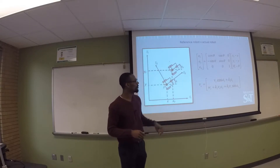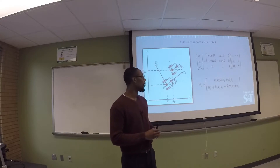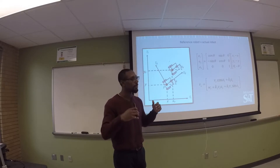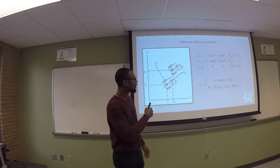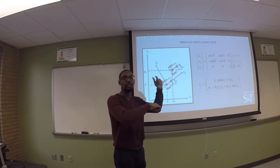It has already been derived in robotics literature that there is a command velocity — considering only the geometric relationships between the two robots — that will drive the actual robot to the reference robot's location. That command velocity is defined here as VC. VC is a function of the errors E1, E2, and E3, and a function of the reference robot's velocities vr and omega r, which we use to calculate the velocity to apply to the actual robot.